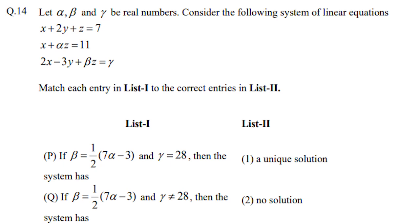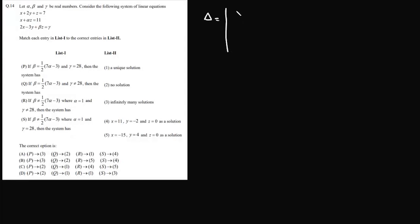We are given a system of linear equations and we need to solve these four entries. What we'll do is find delta. Delta in this case is the determinant with entries 1, 2, 1 / 1, 0, alpha / 2, -3, beta. Solving this, we get 3 alpha and minus 2 beta minus 2 alpha and minus 3. So the value of delta will be 7 alpha minus 2 beta minus 3.